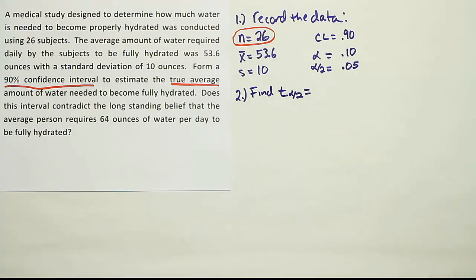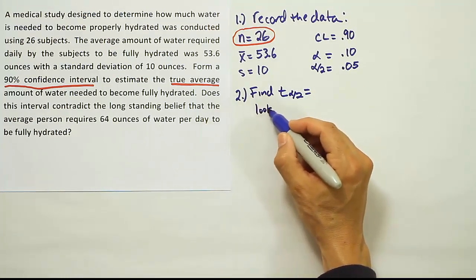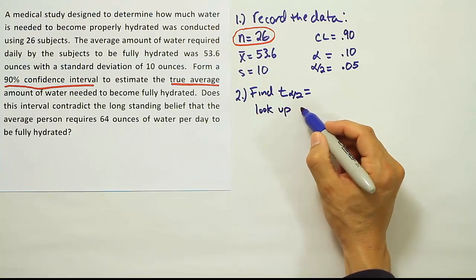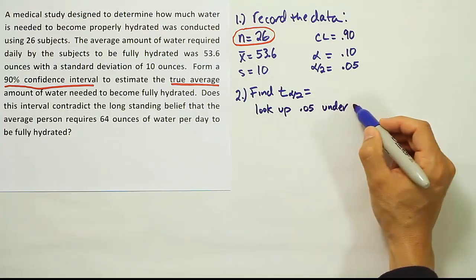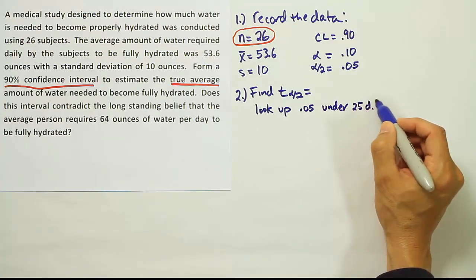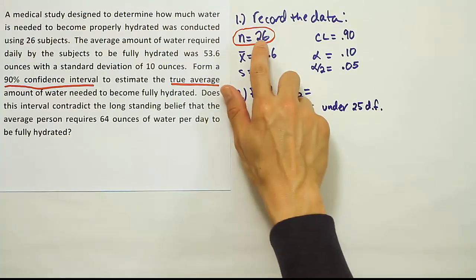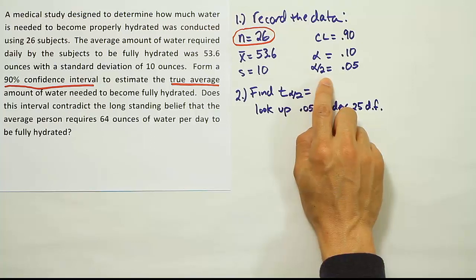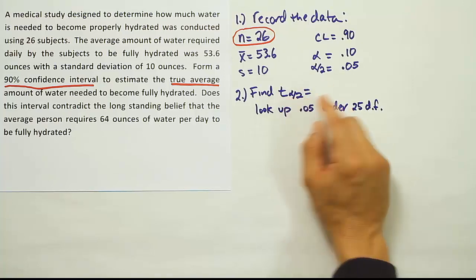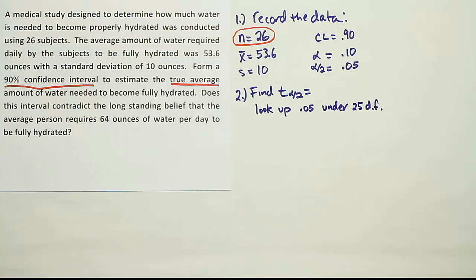In order to find T α/2, we look up this area. So we're going to look up 0.05 under 25 degrees of freedom. Remember, the degrees of freedom is simple to calculate. It's just n minus 1, so 26 take away 1 gives us the 25. We know we're always looking up α/2 on the T table. Let's go to the T table and find the critical T value.